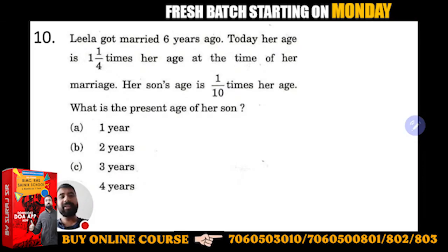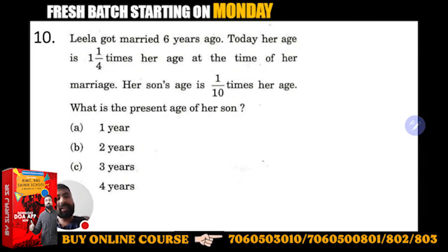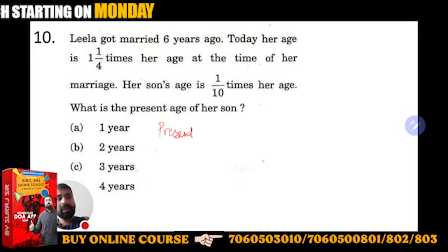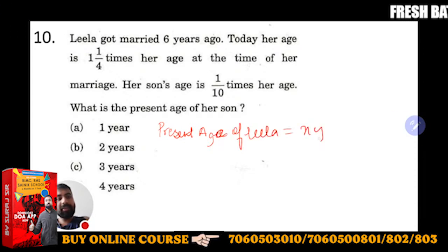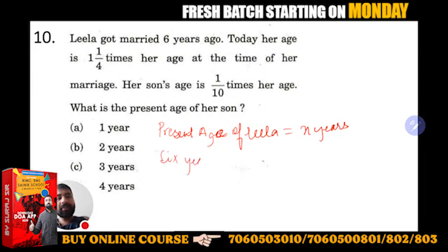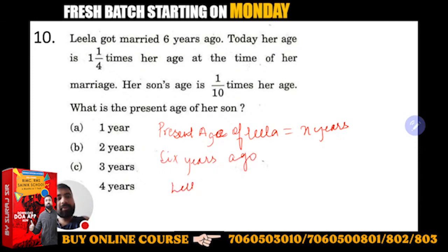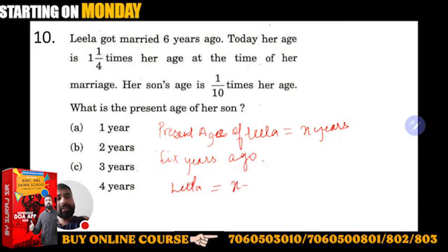Leela got married six years ago. So Leela's present age is equal to x years. Now, six years ago, Leela's age — that will be nothing but x minus 6.